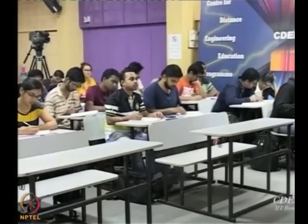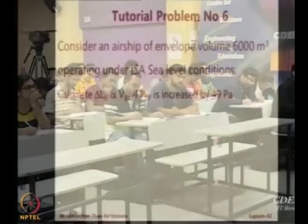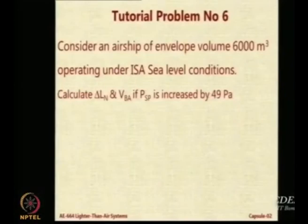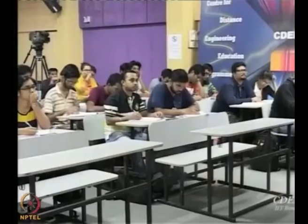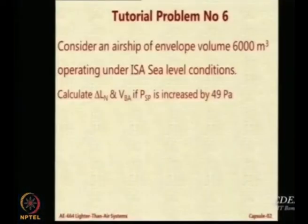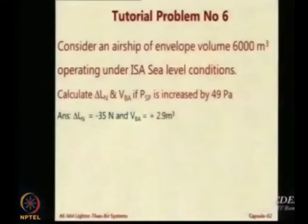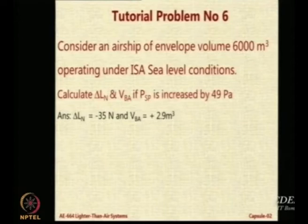Now at sea level, we have pressure as 101325 and you increase it by 49 because of the super pressure. The answer you get is 4.87 × 10⁻³⁵ Newton, and 2.9 cubic meters by finding the volume of the weight and then using the density.